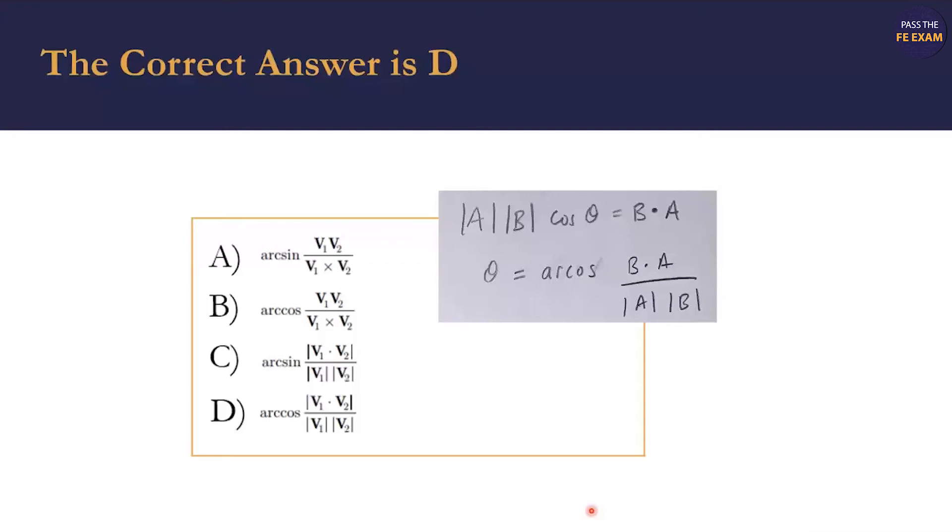Now, if you go to our solution, and again, you can see I carried this over the next page, which one of these looks like that? Well, there's only two arccosine. And this is it right here, the dot product of the vectors over the magnitude of the vectors. And that's your answer.